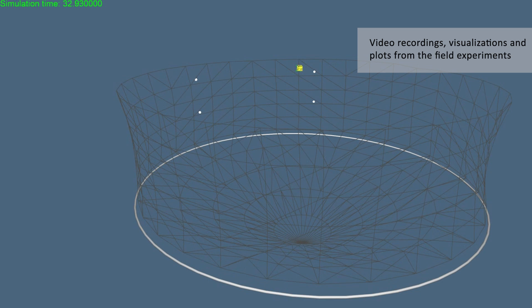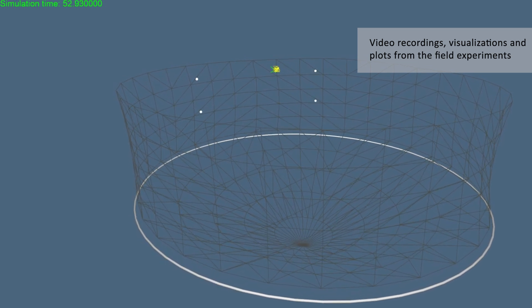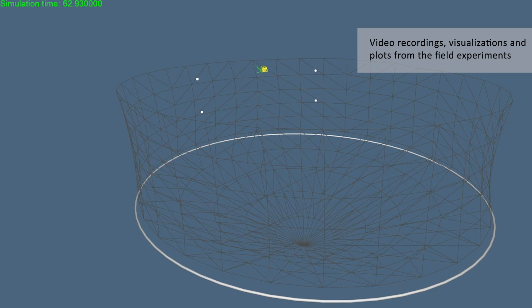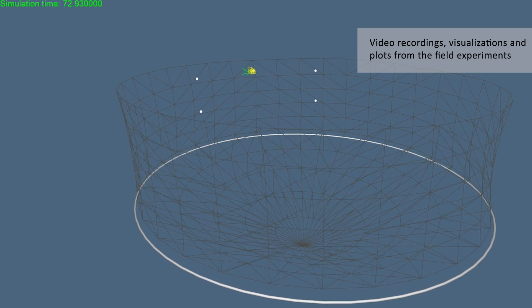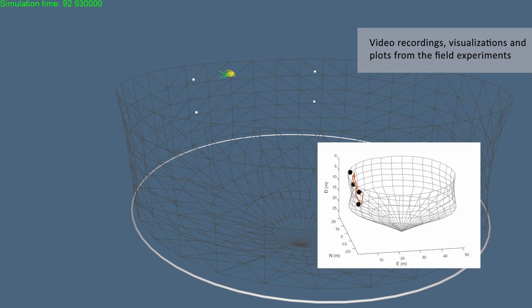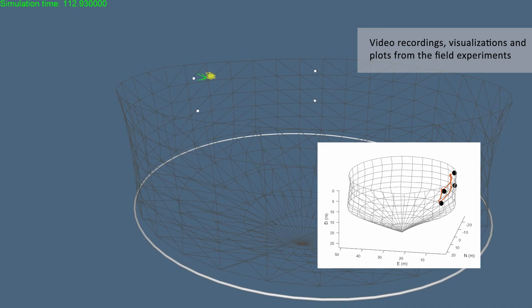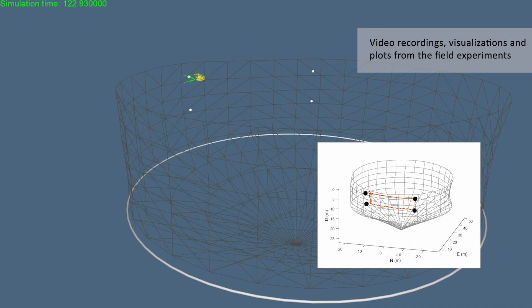In another set of experiments, we configured a set of waypoints defined relative to the net by specified azimuth angles and depths, which were then transformed to Cartesian coordinates using the estimated net pen. The results show that the ROV was able to reach all waypoints while keeping a desired distance from the net.